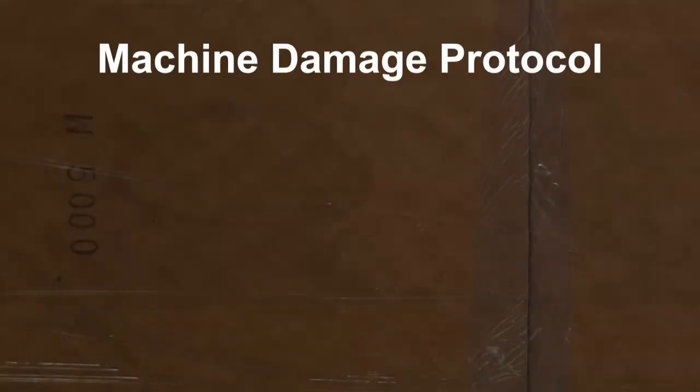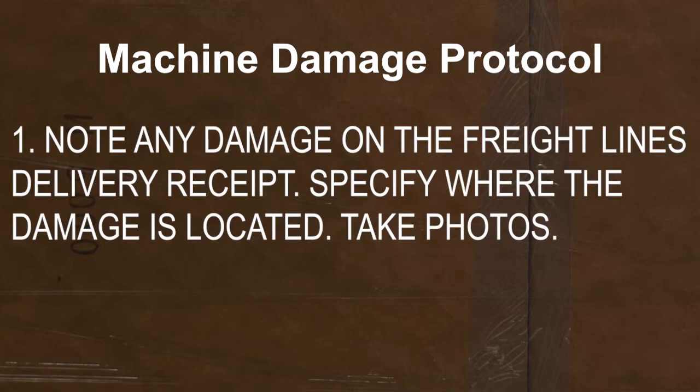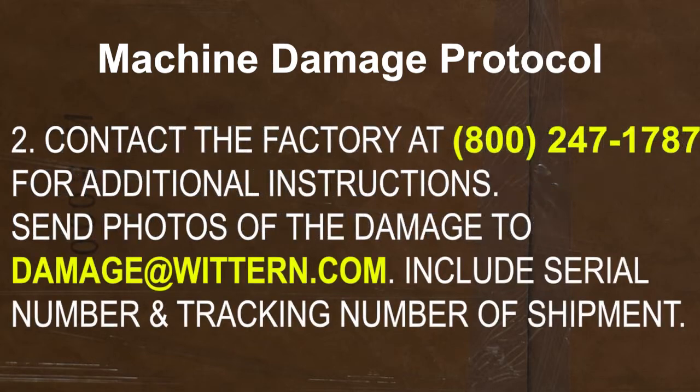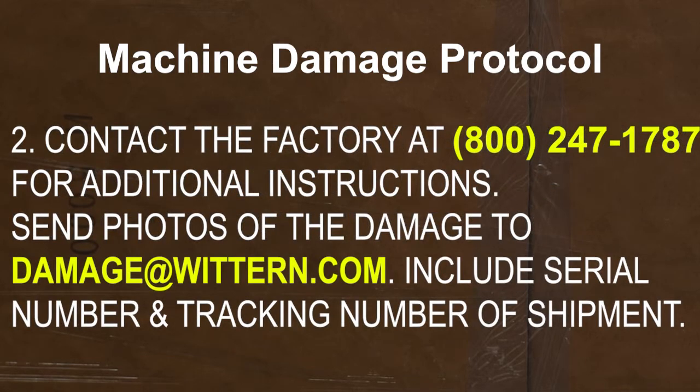If any carton is received in a damaged condition, it is very important that you follow these steps. First, note any damage on the freight line's delivery receipt. Specify where the damage is located. Take photos of the damage. Second, contact the factory at 800-247-1787 for additional instructions. Send photos of the damage to damage@wichern.com. Include serial number and tracking number of shipment.